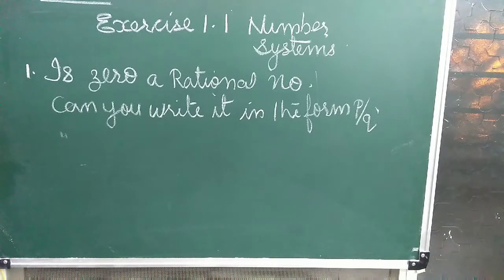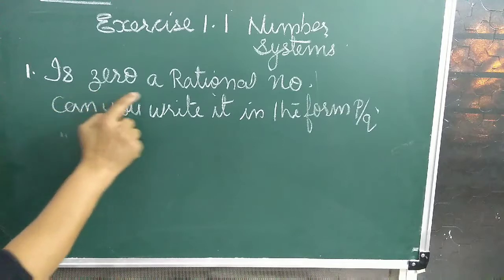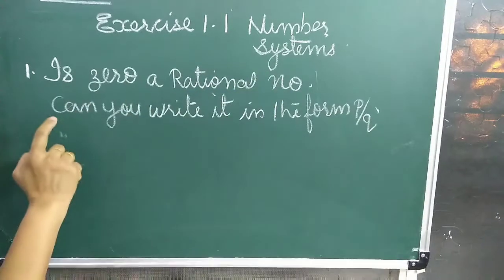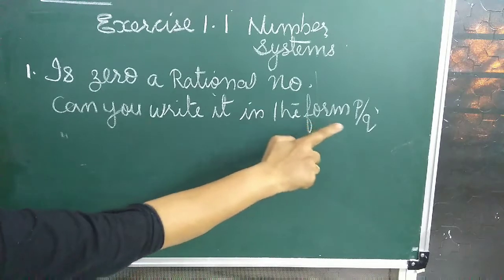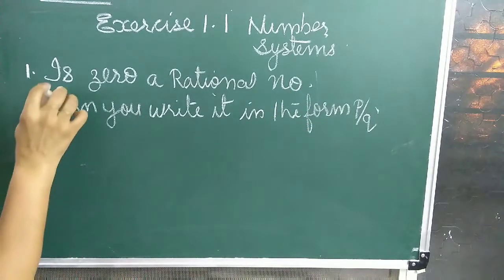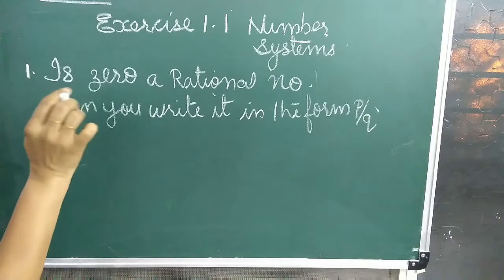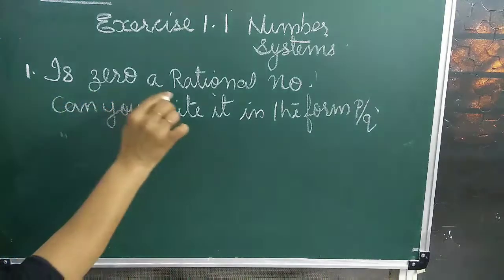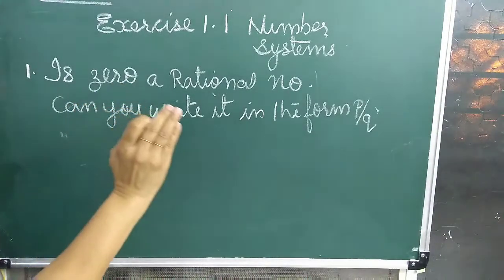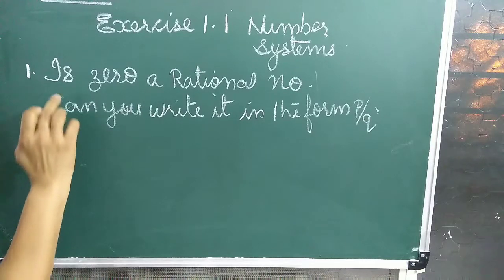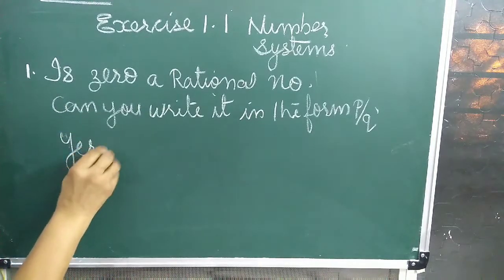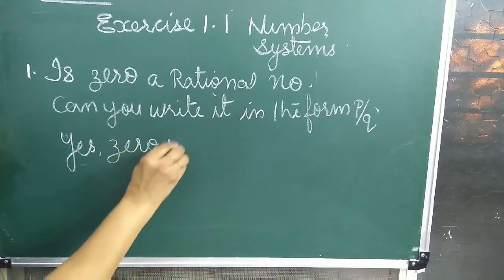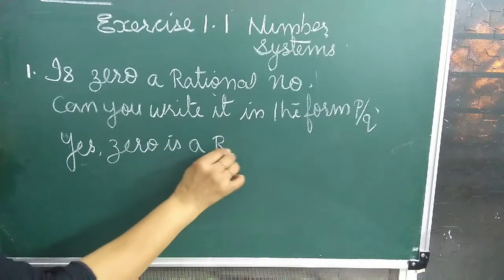Let us do Exercise 1.1 of Number Systems. First question is: is zero a rational number? Can you write it in the form p upon q? We know zero is a rational number because zero can be written in the form p upon q. So the answer is yes, zero is a rational number.